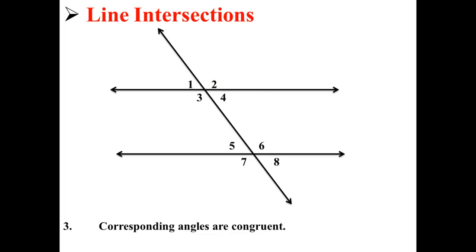The third rule is that corresponding angles are congruent. That is, angles 1 and 5 are the same, angles 2 and 6 are the same, angles 3 and 7 are the same, and angles 4 and 8 are the same.